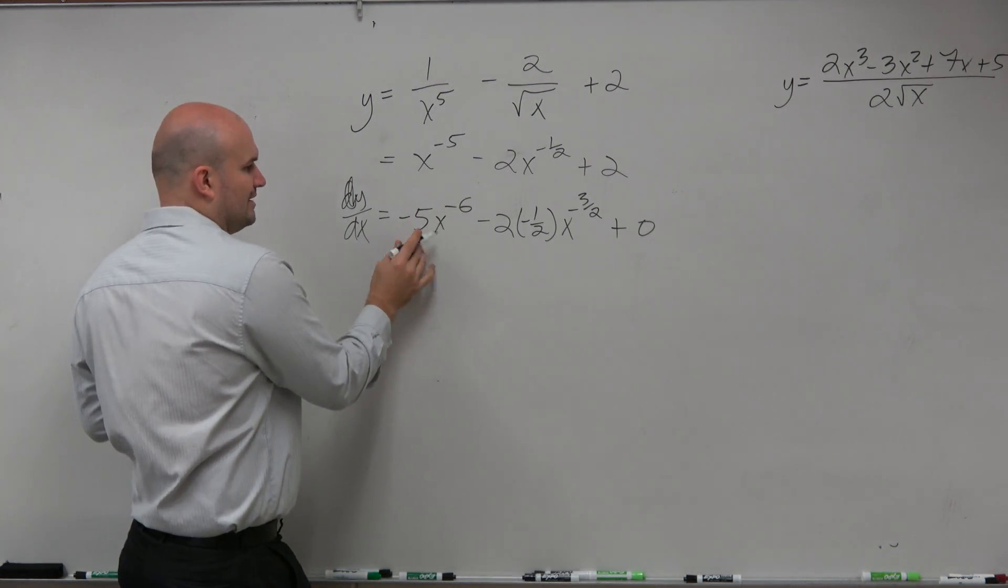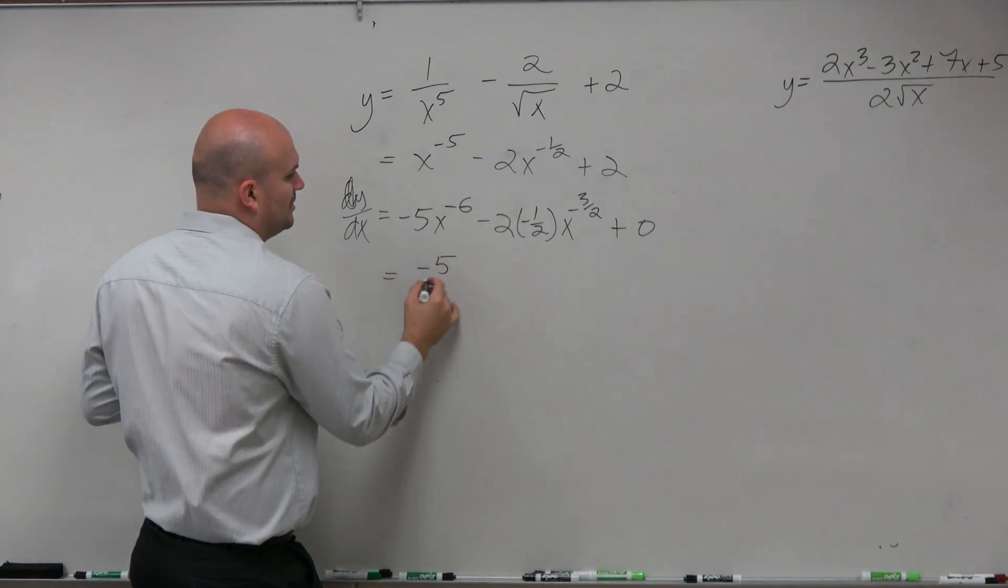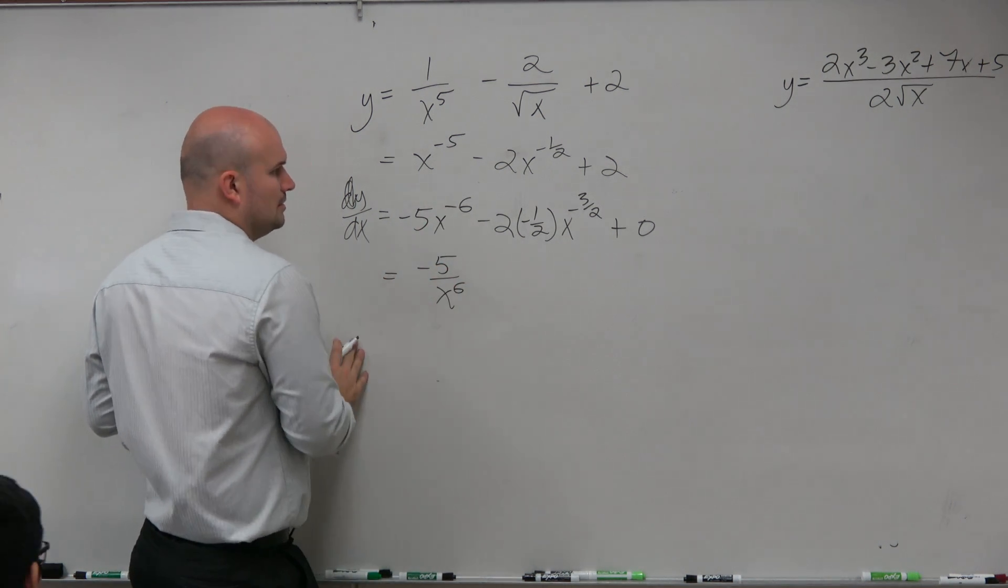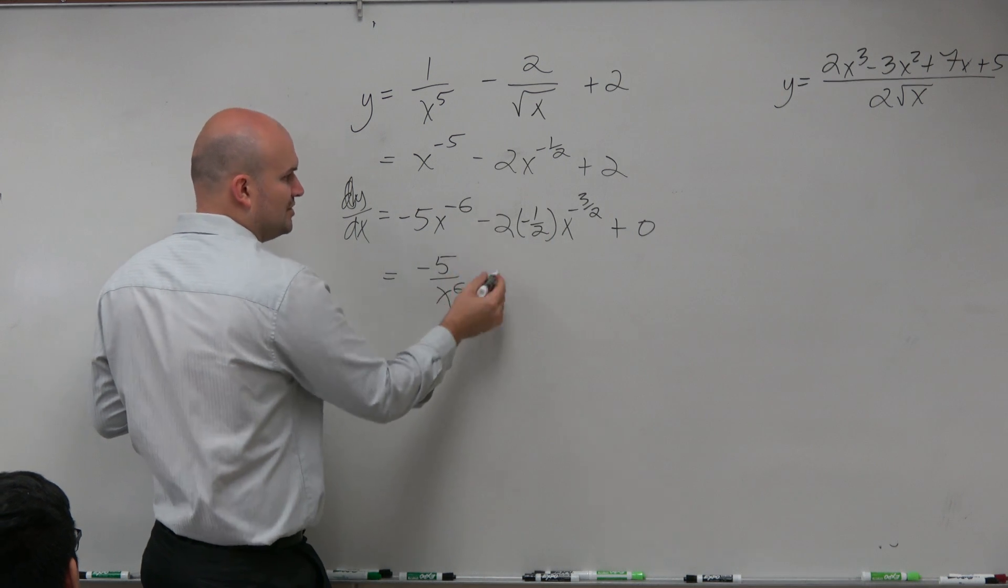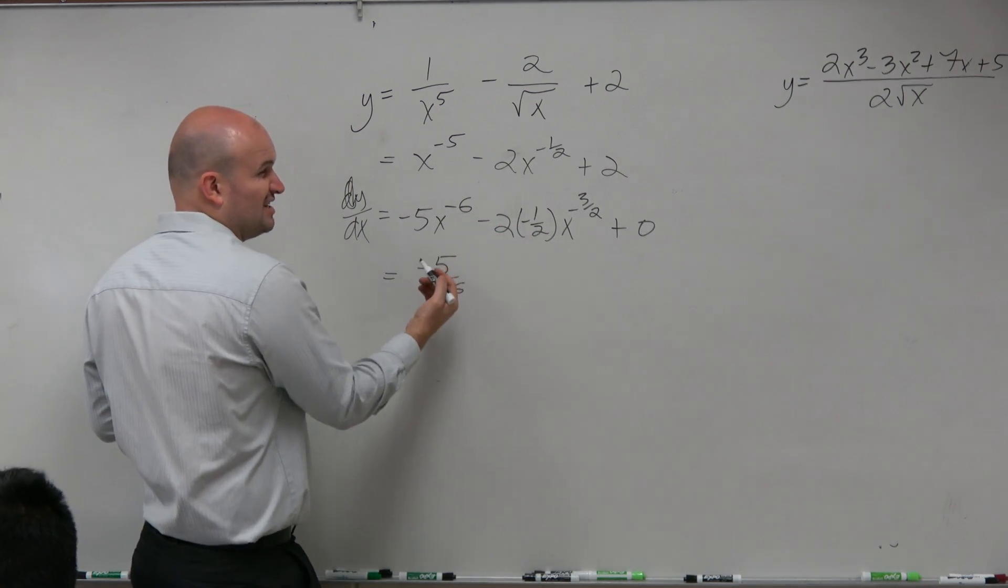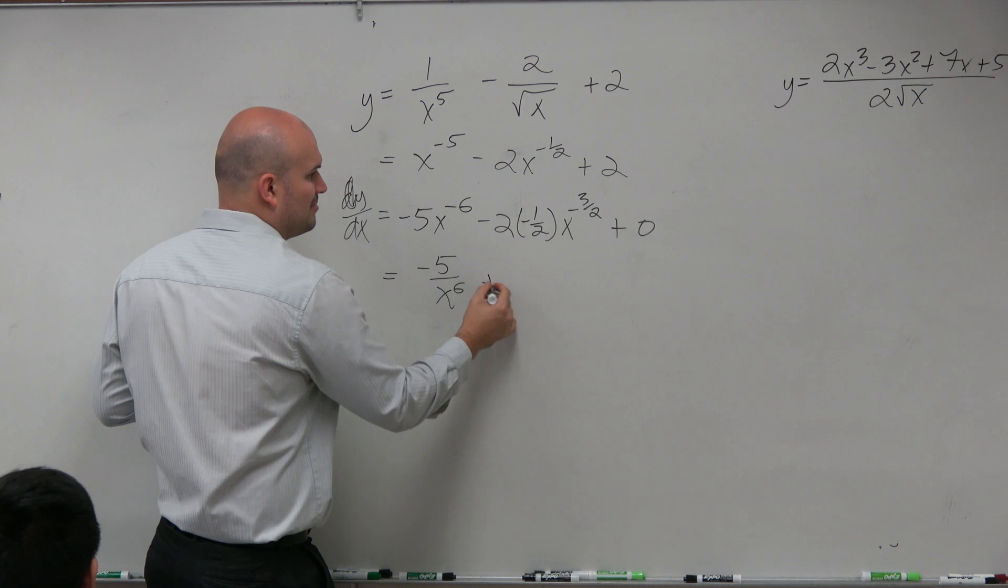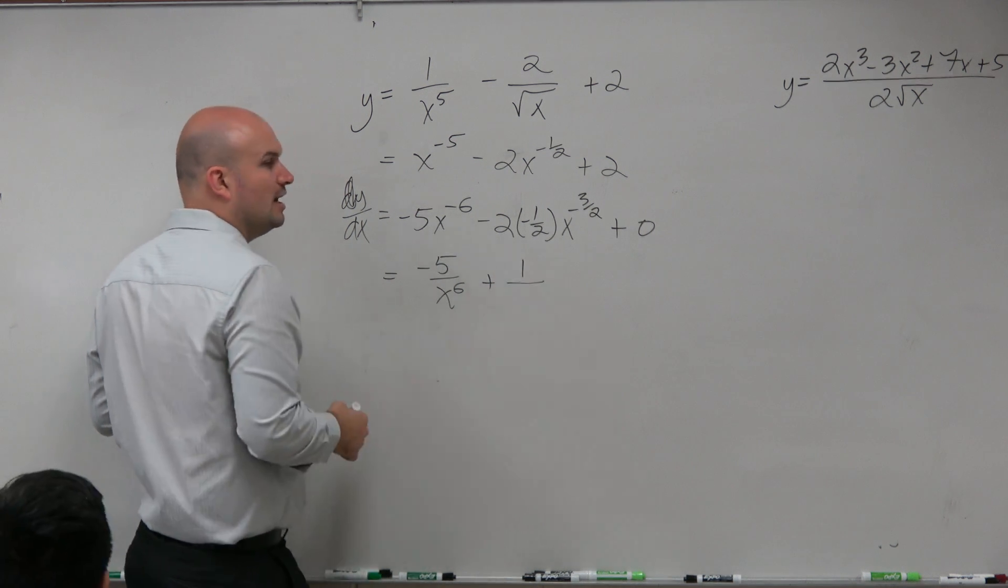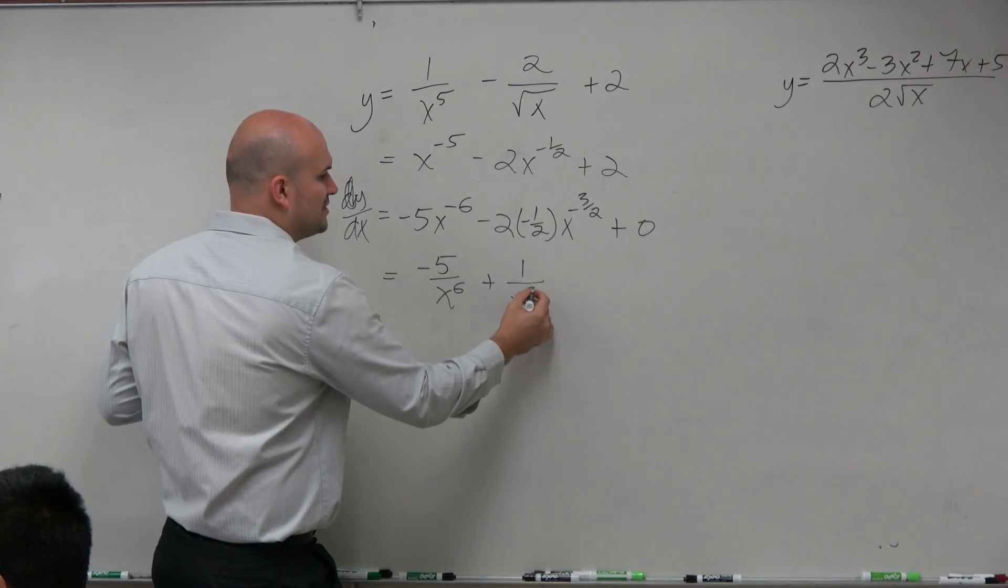Alright, so now we can leave this up here and then bring the negative power below. Right? Multiply these two. 2 over 1 half, that's just going to give us a 1. So, that's going to be plus a 1 over X to the 3 halves.